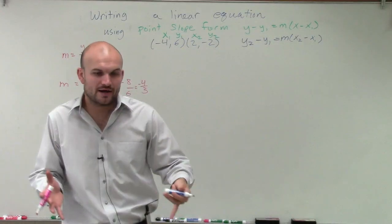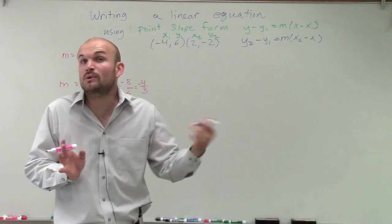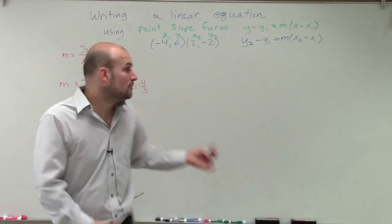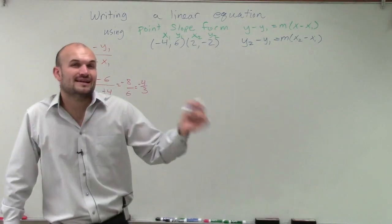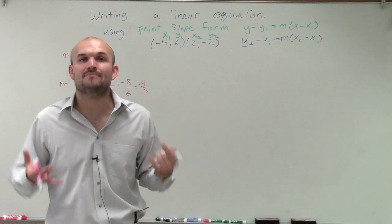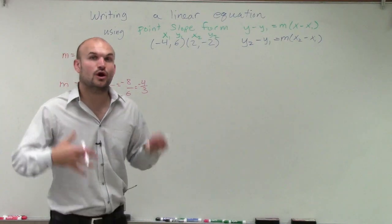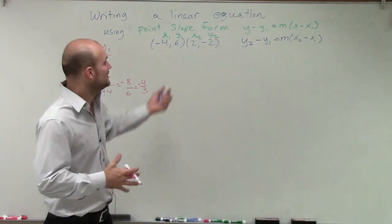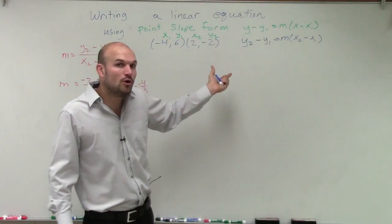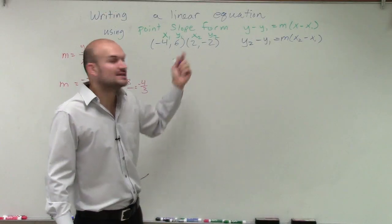Now before, I showed you how to write it into slope-intercept form. We're just given one point and the slope. Well, now we're given two points, so we need to determine which point do we pick. And it doesn't matter, because it's going to be true for all points that lie on the line. So since these are the two points that we're told are on the line, we can choose either one.